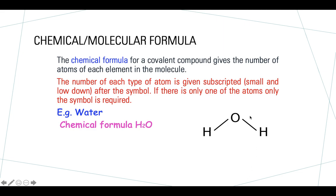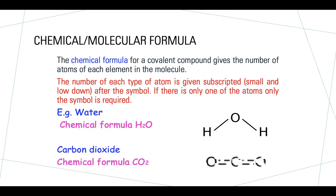We can see that oxygen is in the middle as the central atom, surrounded on two sides by hydrogen atoms, with solid lines showing those bonds are covalent. Another example is carbon dioxide: C for one carbon, O with a subscript 2 for two oxygens — CO2. Rather than having just one line connecting carbon to oxygen, we have two, representing what is called a double bond, which I will go into more detail about later in the lesson.